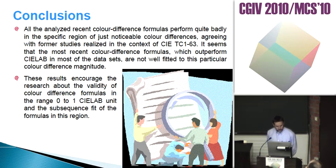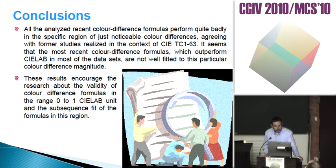In conclusion, all analyzed recent color difference formulas perform quite badly in the specific region of just noticeable color differences, agreeing with former studies. In the context of Technical Committee 163, it seems that the most recent color difference formulas which outperform CIELAB on most data sets are not well fitted to this particular color difference magnitude. These results encourage further research on the validity of color difference formulas in the range 0 to 1 CIELAB unit and the subsequent fitting of formulas in this region.